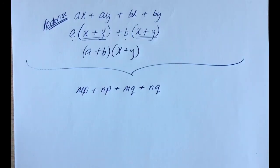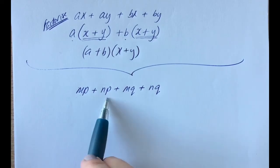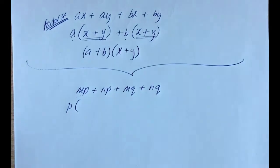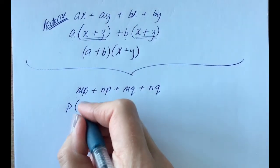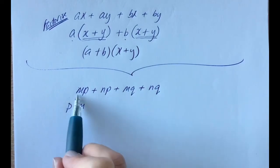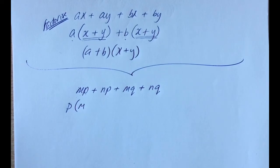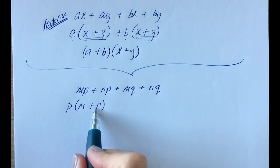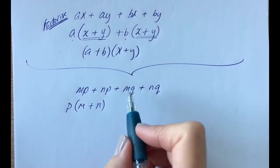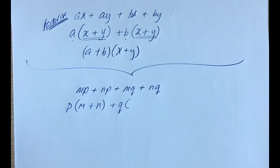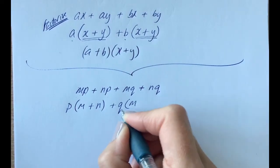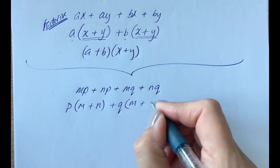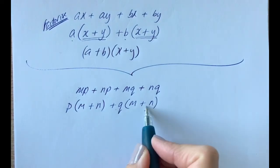Let's try this one — press pause if you feel confident to give it a go yourself, otherwise listen along. Taking the first two terms, I can see what's common is p. So I pull it out and open up my bracket. What do I need to multiply p by to get mp back? An m — p times m is pm or mp, order doesn't matter. And I need to multiply by a positive n to get pn or np — same thing.